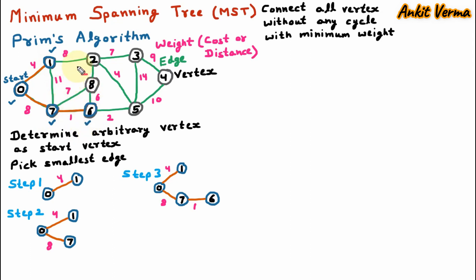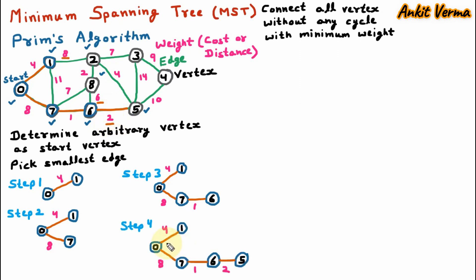We find other connected vertices. From vertex 1 we can reach vertex 2; from vertex 7 we can reach vertex 8; and from vertex 6 we can also reach vertex 8 and vertex 5. Their weights are 8, 7, 6 and 2. The minimum weighted edge is between vertex 6 and 5 with weight 2. In step 4, one more edge is added.